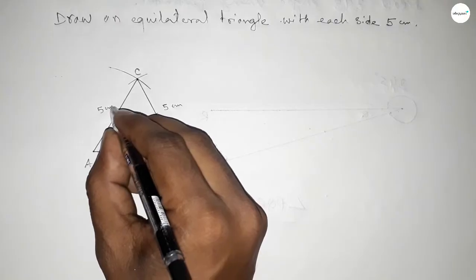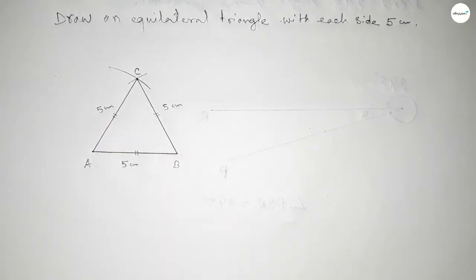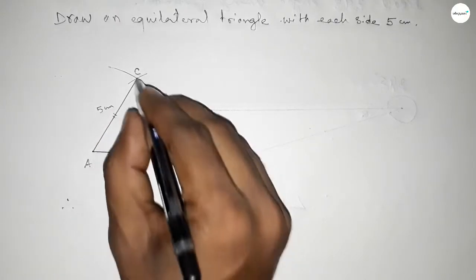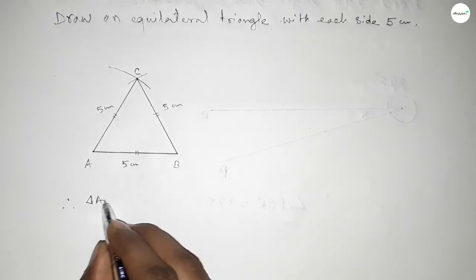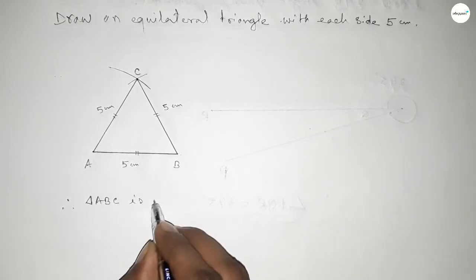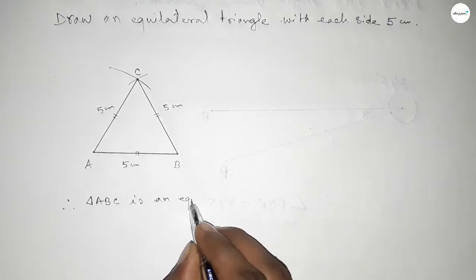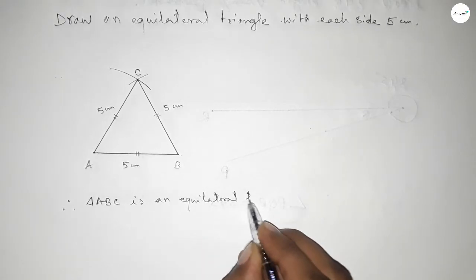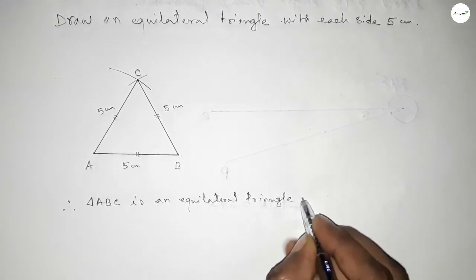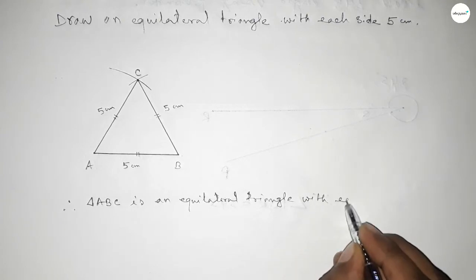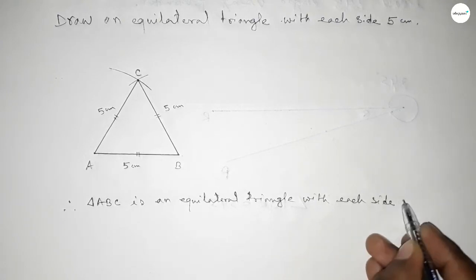Therefore triangle ABC is an equilateral triangle with each side 5 centimeters. So this is the process to construct an equilateral triangle with each side 5 centimeters.